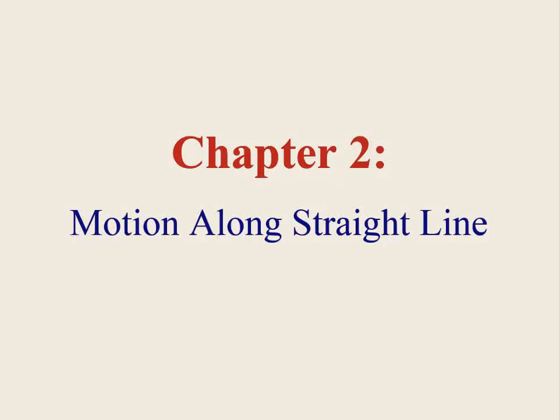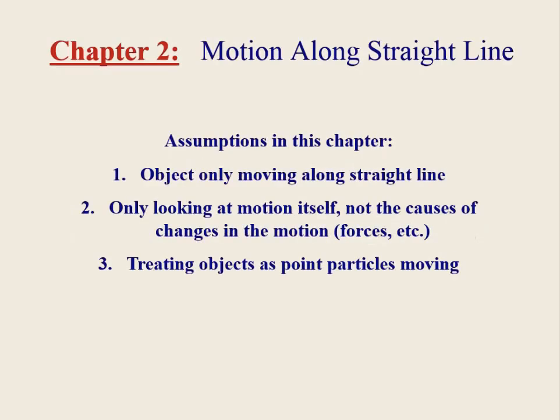This video will serve as an introduction to chapter 2, which deals with motion along a straight line. In this chapter, we're going to be looking at objects that are moving in a straight line, also sometimes referred to as one-dimensional motion. Objects are only moving in a straight line — think of a car that's fixed to move on a railroad track. It can move back and forth along the track, but it can't turn off the track. A person pacing back and forth would also be an example of something moving in a straight line.